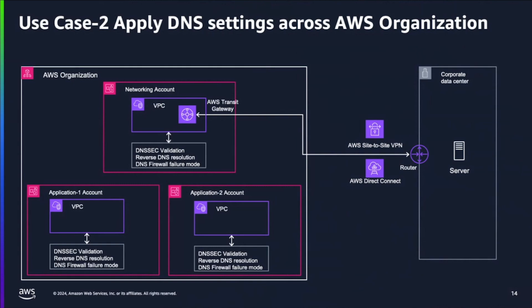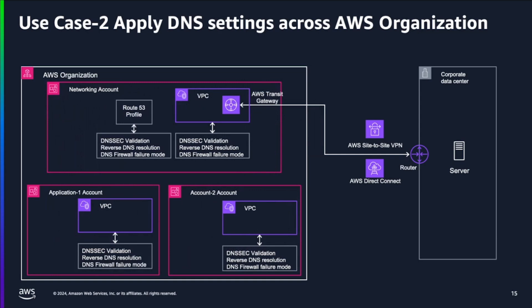Let's talk about the second use case. In this use case, we have three accounts with a VPC in each, and each VPC has its own DNS settings. If you want to change a DNS setting, you have to go to the individual VPC level. With Route 53 profiles, you can create a profile, associate it with a networking VPC, share the profile across your organization, and associate VPCs from other accounts with it. If you want to change a setting at the organization level — for example, enabling DNSSEC validation for all VPCs — you can do it from the Route 53 profile configuration tab and it will be applied to all associated VPCs.